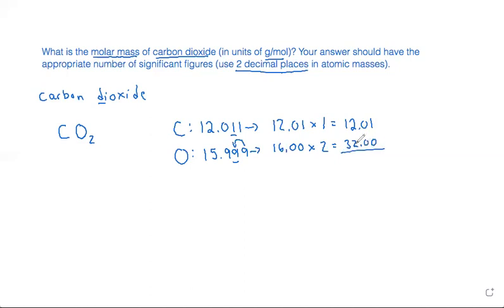Once I find the molar masses for all of the elements multiplied by their subscripts, I add them together. So this would be, the molar mass of carbon dioxide would be 44.01.